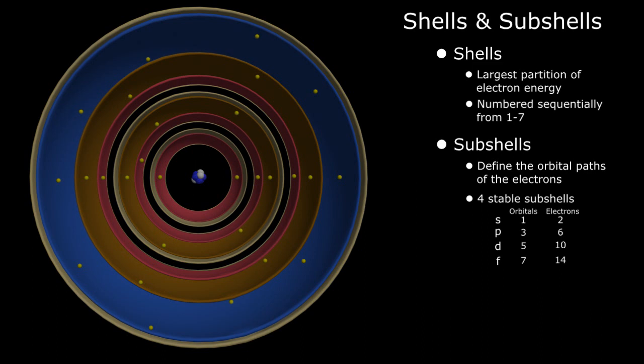Finally, the number of subshells in each shell is determined by the shell number itself, i.e. shell number 1 has one subshell, shell 2 has two subshells, shell 3, three subshells, etc.